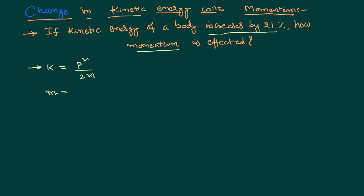In this problem we are dealing with the same body, hence mass is constant. Therefore I can write kinetic energy is directly proportional to p square. So we can write an equation k1 by k2 equal to p1 by p2 whole square.